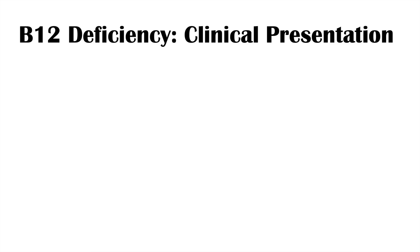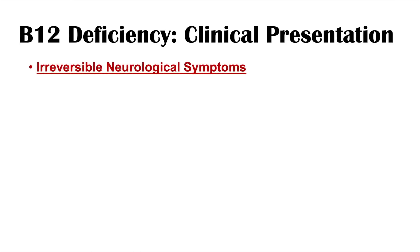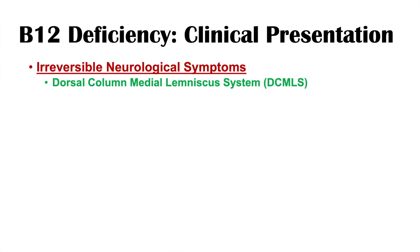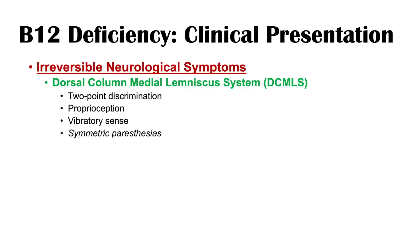This leads into the clinical presentation of B12 deficiency. You get irreversible neurological symptoms from prolonged B12 deficiency because of axonal neuropathy within the dorsal column medial lemniscus system. Those neurons are not going to be repaired. You're going to have issues with two-point discrimination, proprioception, and vibratory sense. You'll have symmetric paresthesias and a shuffling gait — patients feel unsteady on their feet and can't walk well because they've lost proprioception.